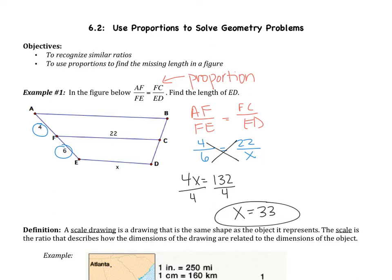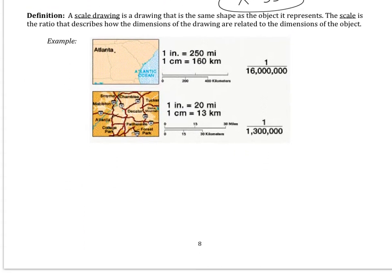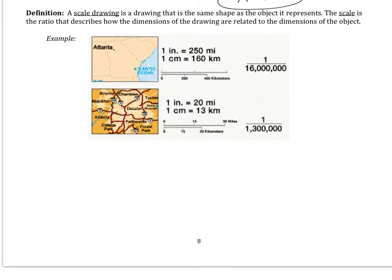So that's the first part of tomorrow's classwork that you're going to be doing. I'm going to give you the proportion, and you're going to have to set it up. Let's move on to the next definition. A scale drawing is a drawing that is the same shape as the object it represents. The scale is the ratio that describes how the dimensions of the drawing are related to the dimensions of the object.